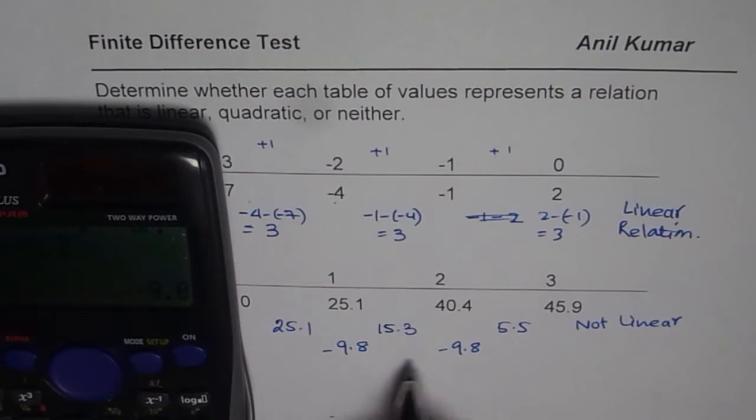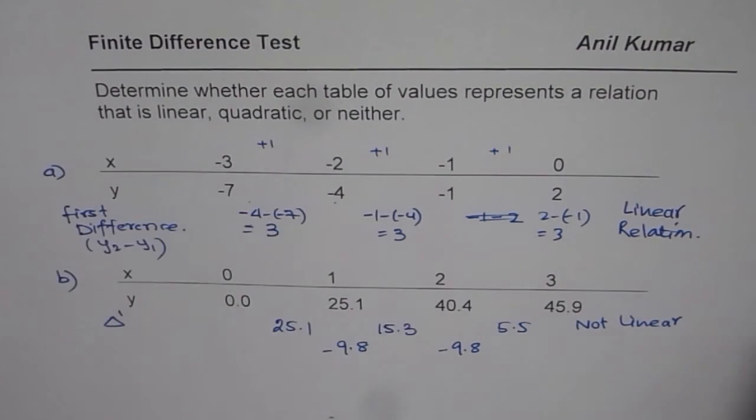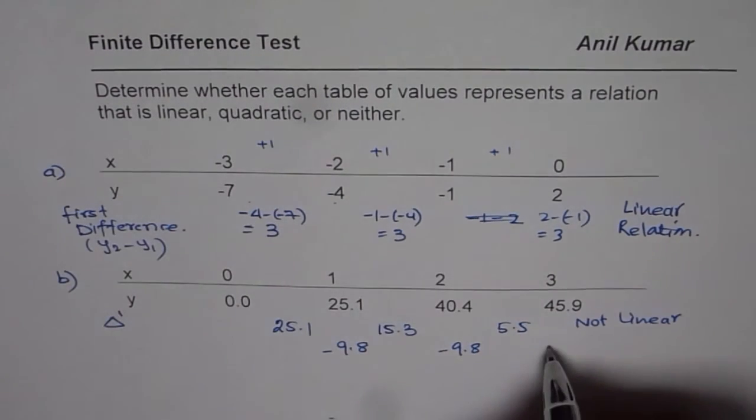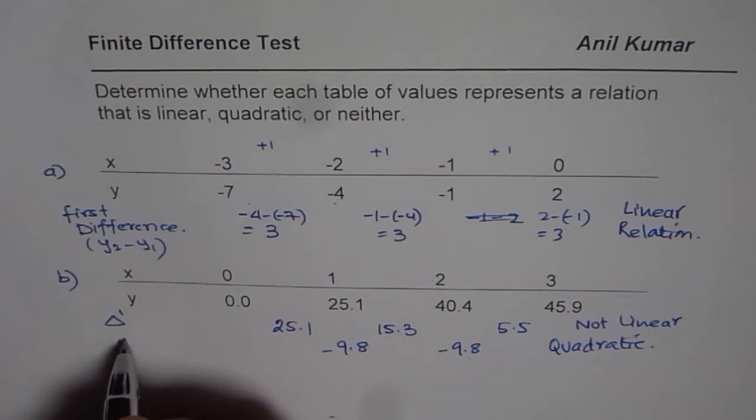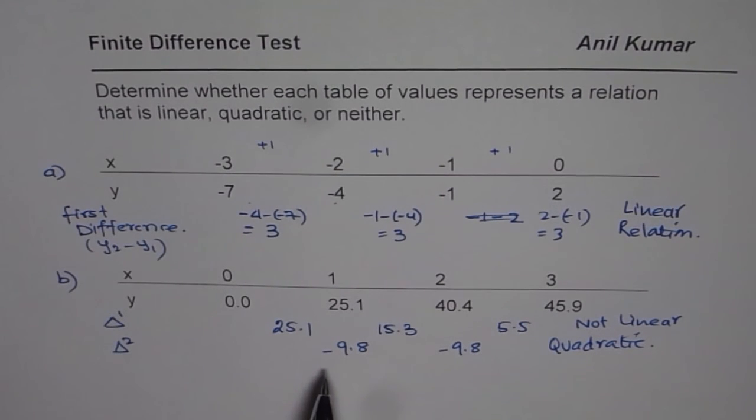Now, since the second difference is constant, the given data in part B is quadratic. So, this one is quadratic in nature. We have the second difference, which is constant, and it is equal to minus 9.8. So, that is how this question should be done. Thank you, and all the best.